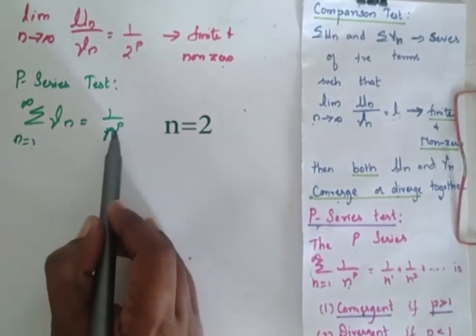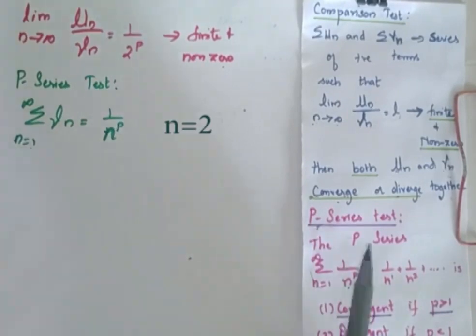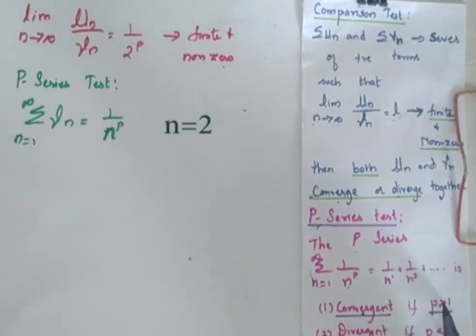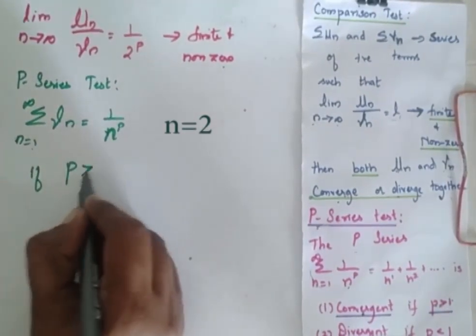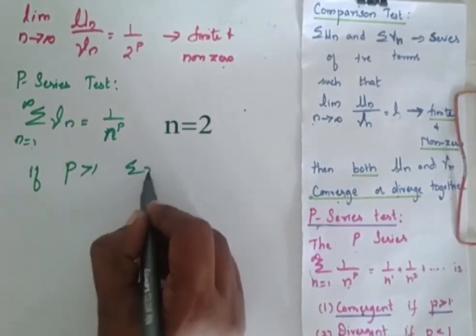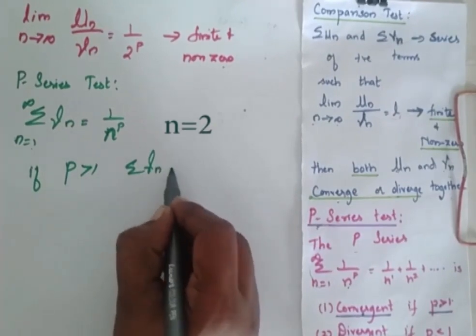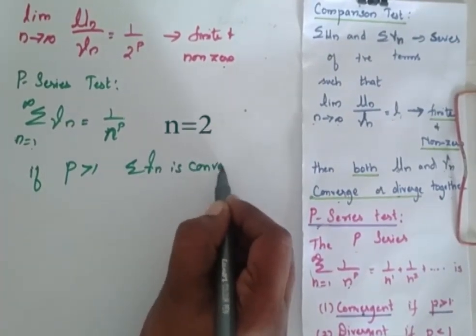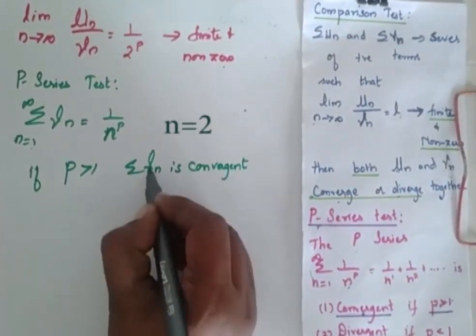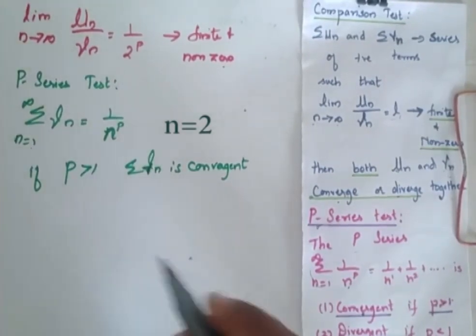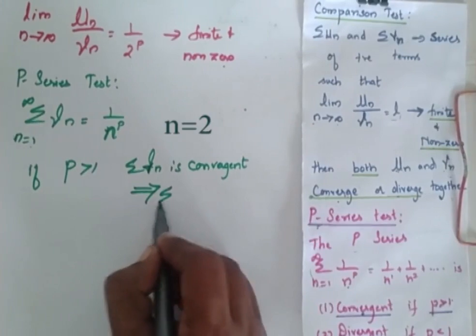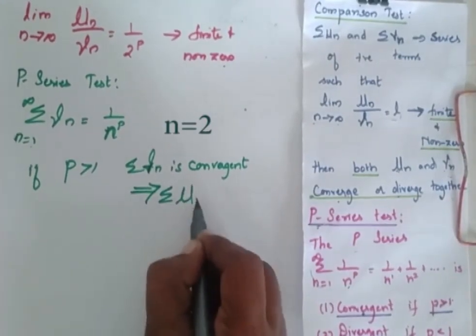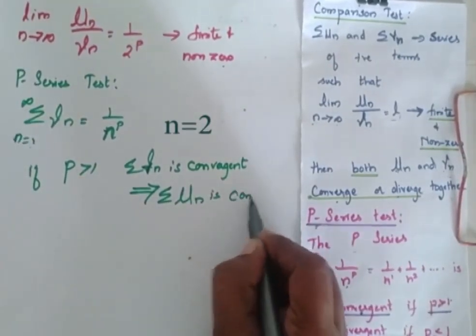For this P there are two possibilities: P may be greater than 1 or lesser than or equal to 1. If P is greater than 1, summation VN is convergent. Since UN and VN behave together, summation UN is also convergent.